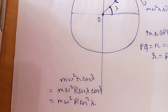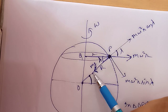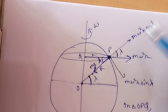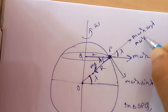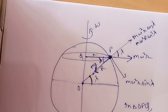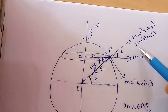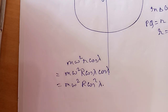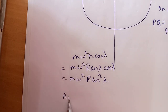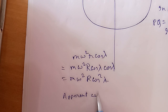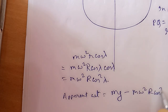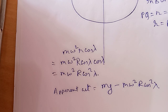The apparent weight is the actual weight minus the component that opposes it. mg acts towards the center of the Earth, and mω²R·cos²λ opposes it. This component reduces the weight, so the apparent weight equals mg minus mω²R·cos²λ.